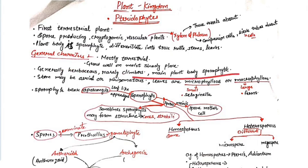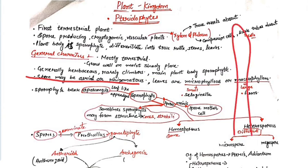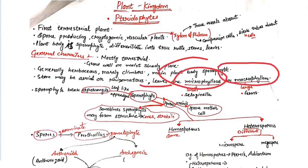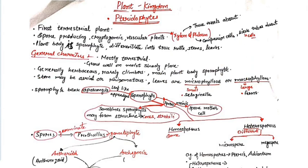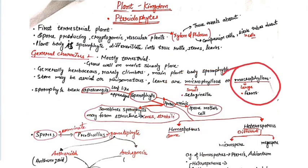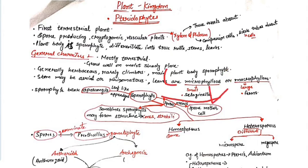The main plant body is sporophytic. The stem may be aerial or rhizomatous. Leaves may be microphyllous — small-sized leaves — or macrophyllous — large-sized leaves. For example, Selaginella is microphyllous, while ferns are macrophyllous pteridophytes.